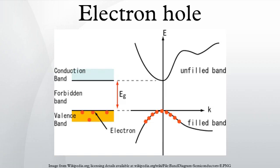An electron hole is the conceptual and mathematical opposite of an electron, useful in the study of physics, chemistry, and electronic engineering. The concept describes the lack of an electron at a position where one could exist in an atom or atomic lattice. It is different from the positron, which is an actual particle of antimatter.